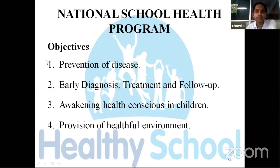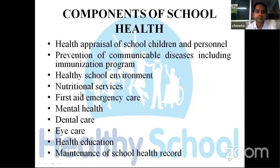National School Health Program objectives are prevention of disease, early diagnosis, treatment and follow-up of cases, awakening health consciousness in children, and provision of a healthful environment. Components of the school health program include health appraisal of school children and personnel, prevention of communicable diseases including immunization, healthy school environment, nutritional services, first aid and emergency care, mental health, dental health, eye care, health education, and maintenance of school health records.